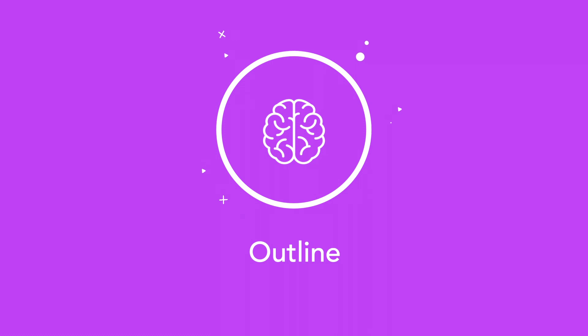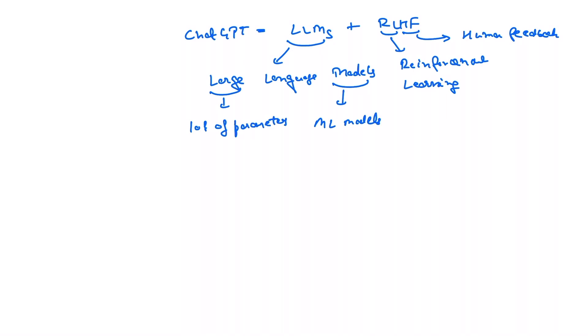To understand ChatGPT we need to understand LLMs and RLHF. LLMs stands for large language models. RL in RLHF stands for reinforcement learning and HF stands for human feedback.